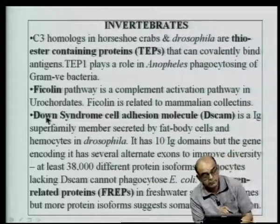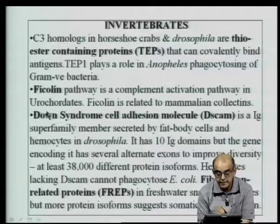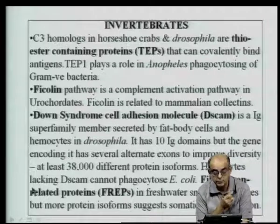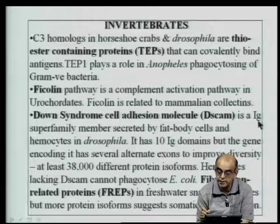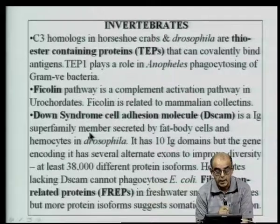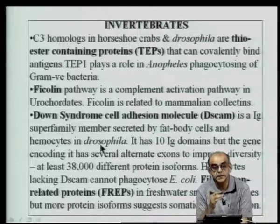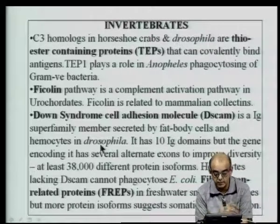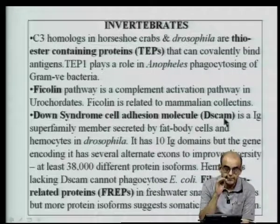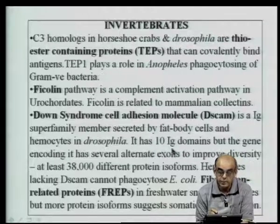Other molecules like ficolin represent a different kind of complement activation pathway found in urochordates, related to mammalian collectin molecules. There is another very important family — members of the immunoglobulin superfamily having the immunoglobulin fold — secreted by fat body cells and hemocytes in Drosophila. This is called the Down Syndrome Cell Adhesion Molecule, or DSCAM. This particular molecule has 10 immunoglobulin domains.